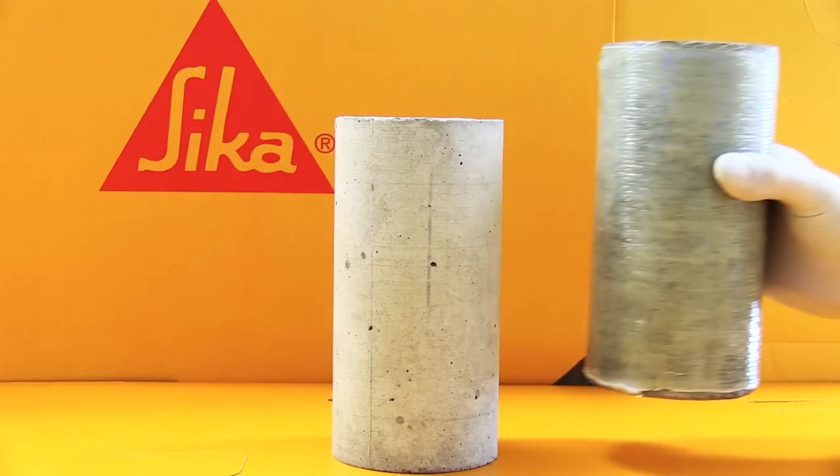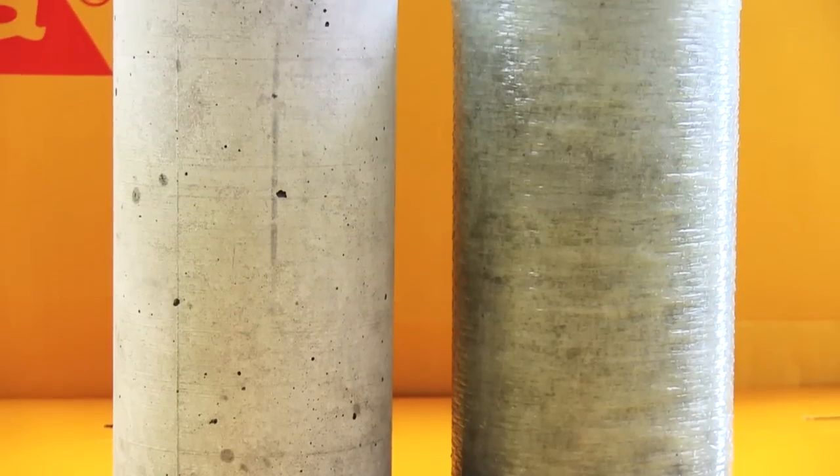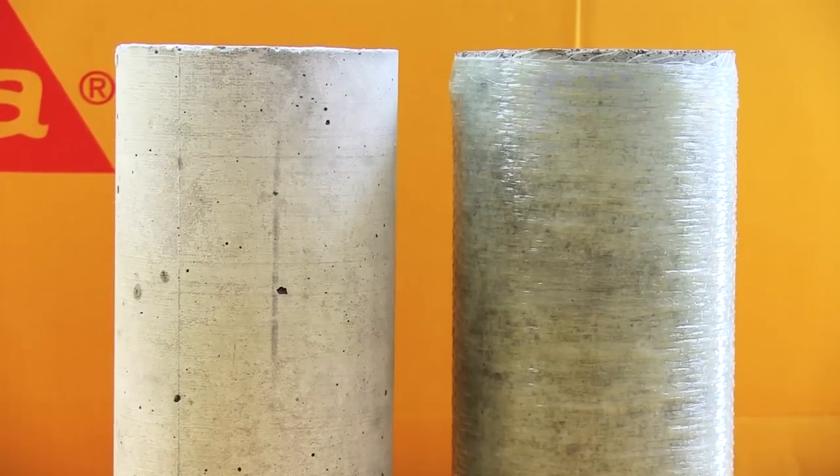To help show this, we set up a simple demonstration in the Sika Laboratory. First we took two concrete columns, identical in their size, weight and compressive strength. The only difference being that one had been wrapped with SikaWrap.